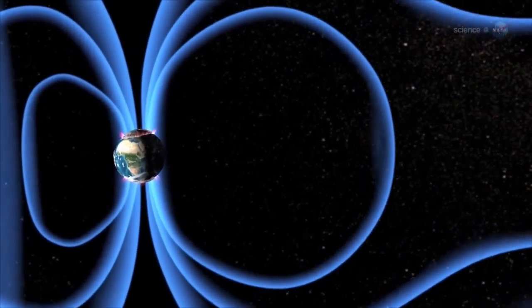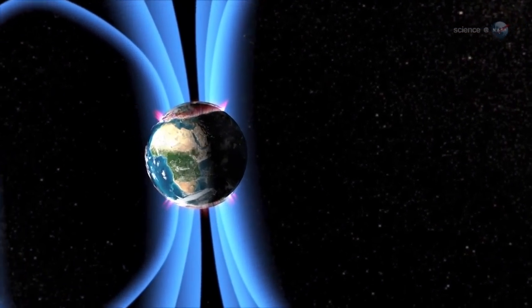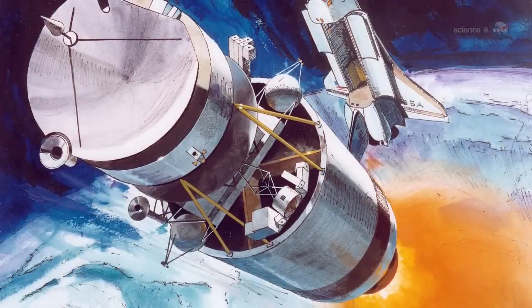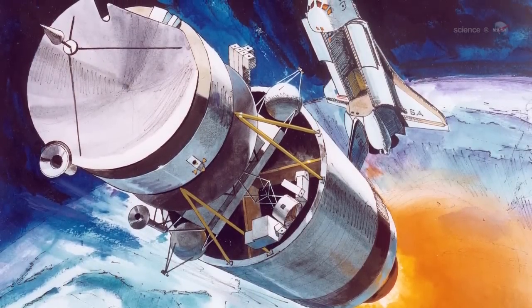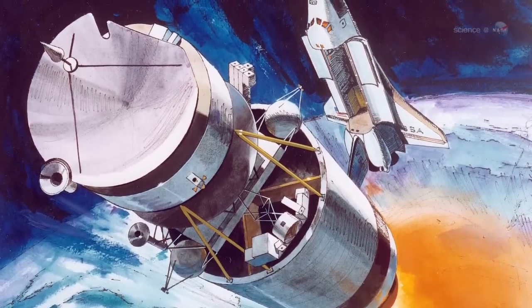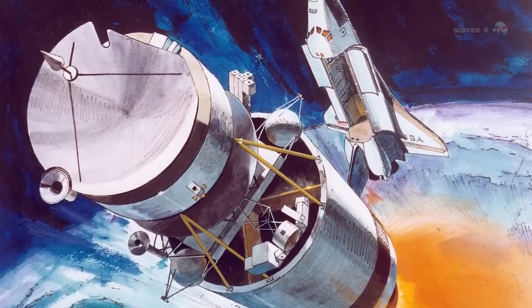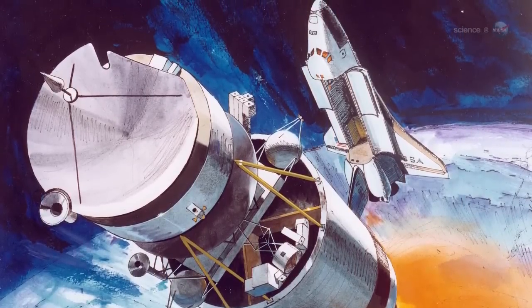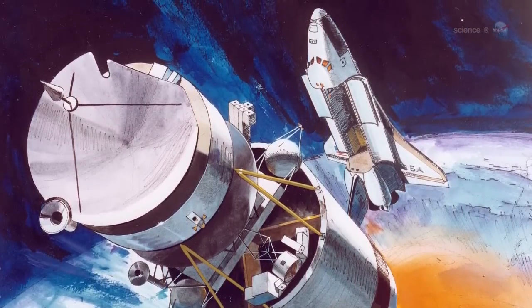To learn how to pinpoint these events, Scudder looked at data from a space probe that orbited Earth more than 10 years ago. In the late 1990s, NASA's Polar spacecraft spent years in Earth's magnetosphere, explained Scudder, and it encountered many X-points during its mission. Because Polar carried sensors similar to those of MMS, Scudder decided to see how an X-point looked to Polar.